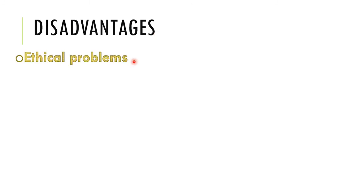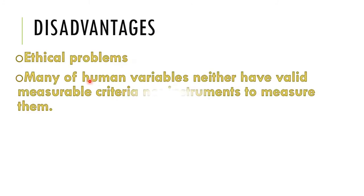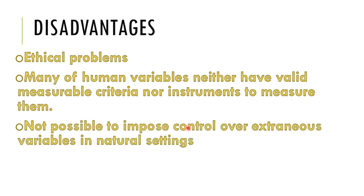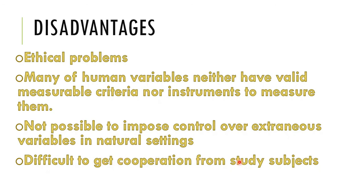Disadvantages of experimental research: There are ethical problems. Many human variables neither have valid measurable criteria nor instruments to measure them. It is not possible to impose control over various variables in a natural setting. It is also difficult to get cooperation from study subjects.